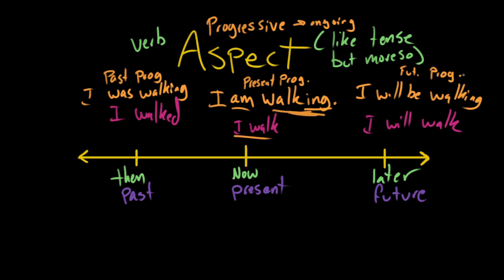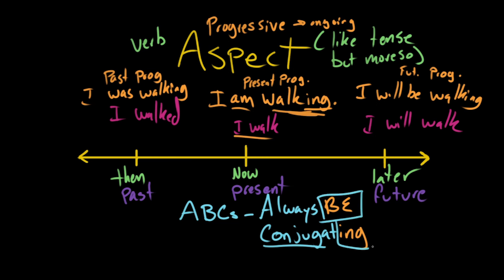So the way to remember the progressive aspect is for me to hideously butcher the writing of David Mamet and tell you to always remember your ABCs: Always Be Conjugating. And conjugating here is just a word that means to put verbs in different tenses and aspects.